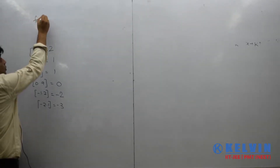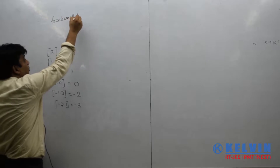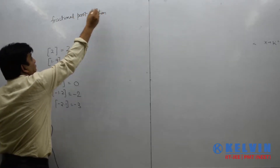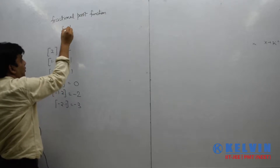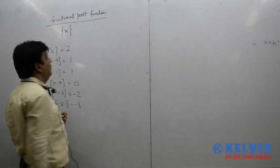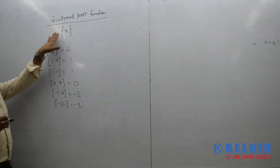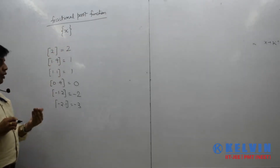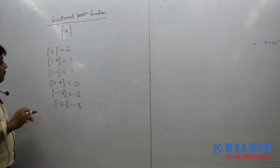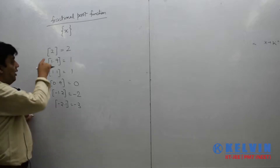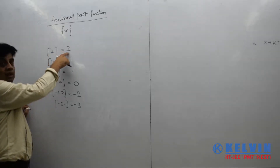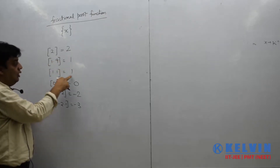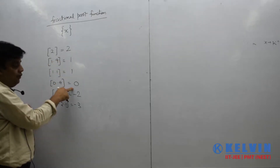This is the fractional part function. We denote it as fractional part of x. As the name says, it is a value which is in fractions — a value between 0 to 1. For example, the greatest integer of 2 is 2, greatest integer of 1.9 is 1, greatest integer of 1.1 is 1, and greatest integer of 0.4 is 0.